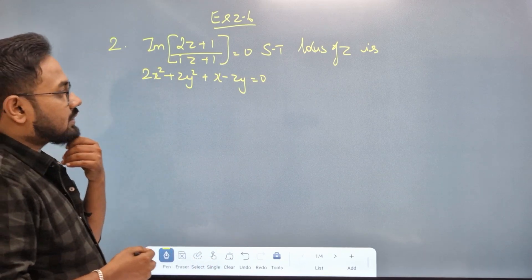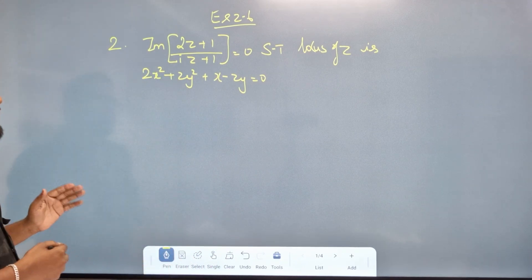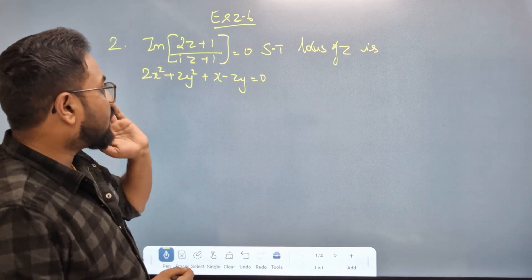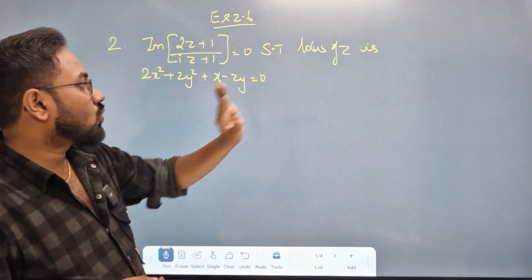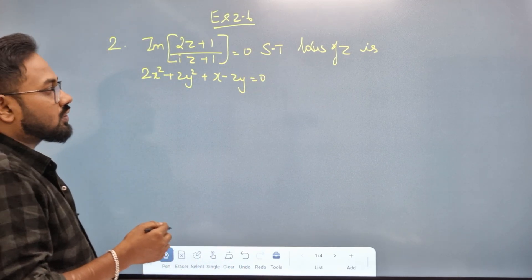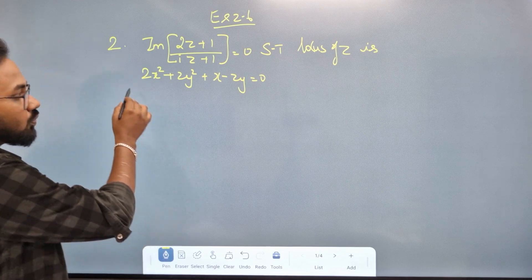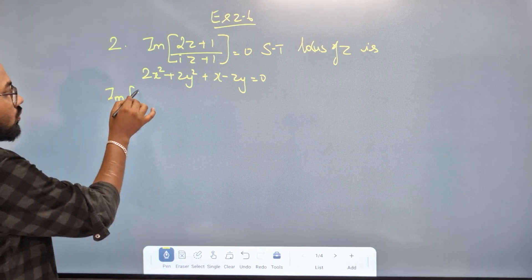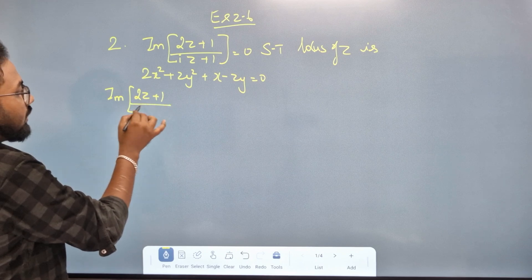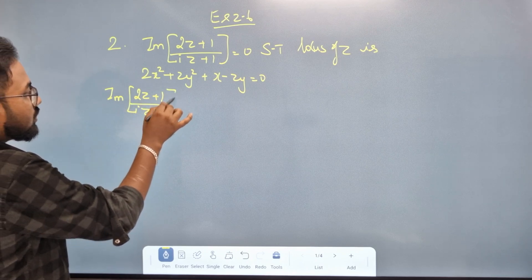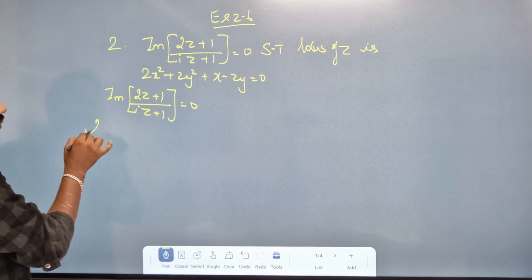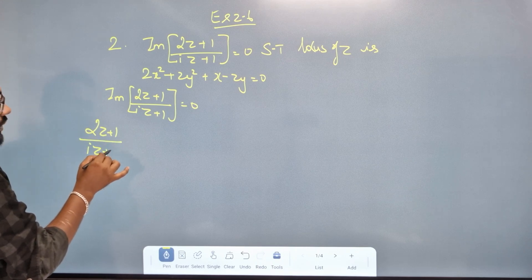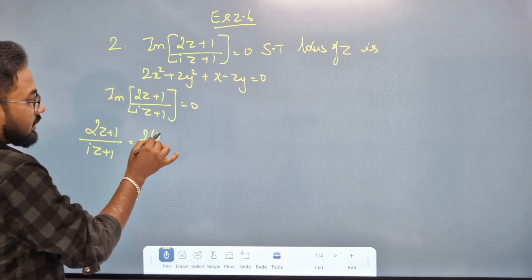X is 2.6. Now, we have imaginary part of (2z + 1) / (iz + 1) equals 0. We need to show that the locus is opposite to that equation. We will prove that. So, imaginary part of (2z + 1) / (iz + 1) equal to 0. In the question, let z equal to x plus iy.